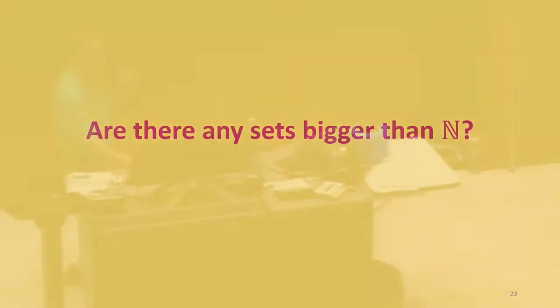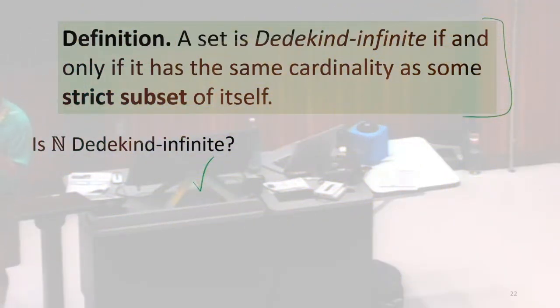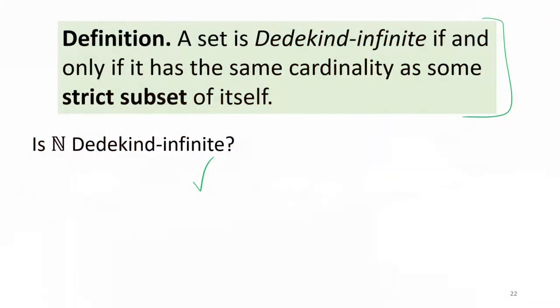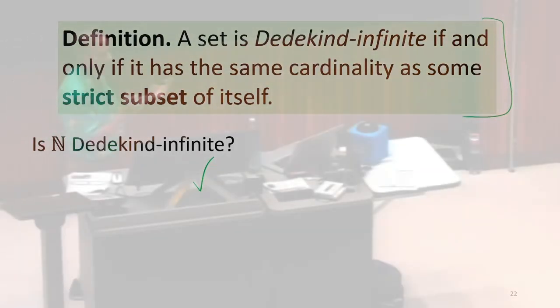Now that we've seen this definition from Dedekind of what an infinite set is, it should be really non-intuitive that there are sets that are bigger. Because if your definition of an infinite set is one whose cardinality is the same as a proper subset, that means you're adding elements to a set without increasing its cardinality. So once you've got the infinite, it seems like that's as far as you can go.